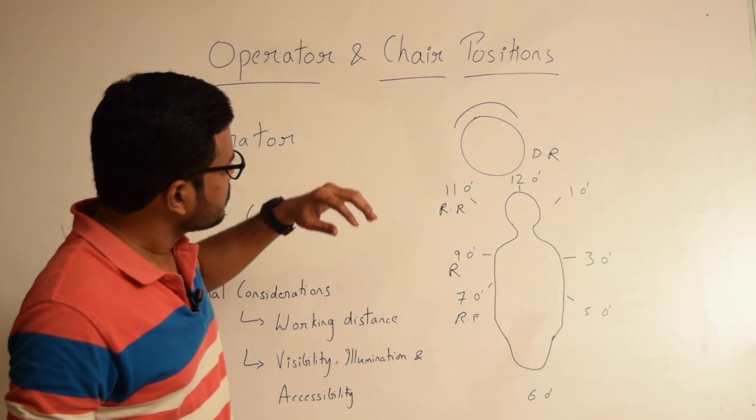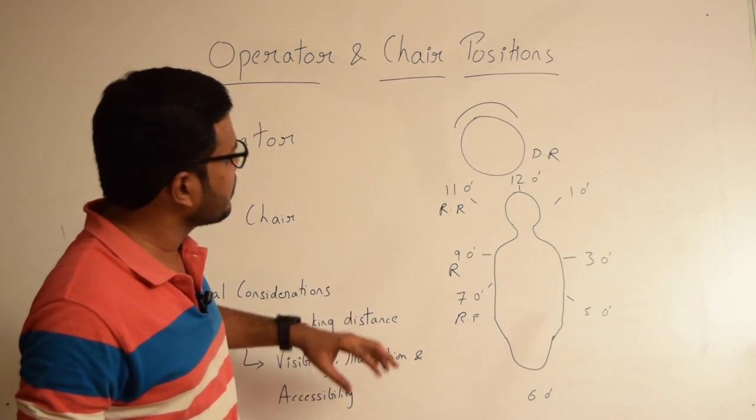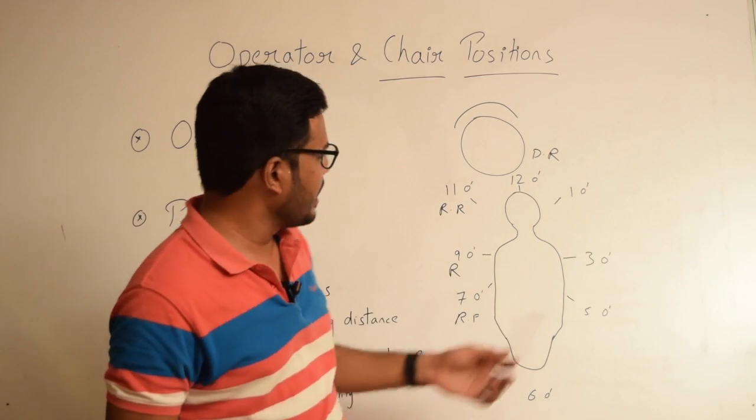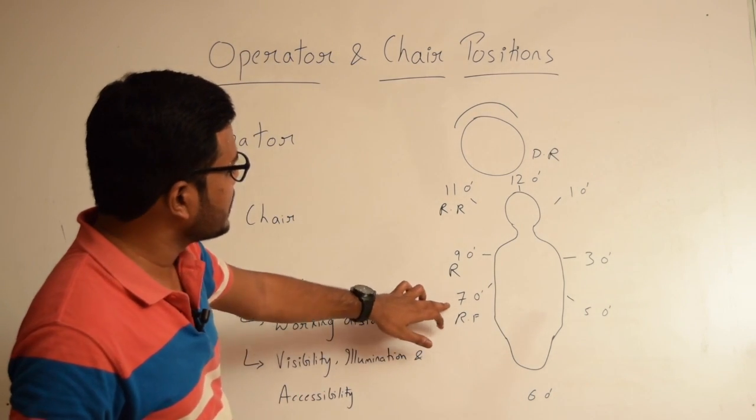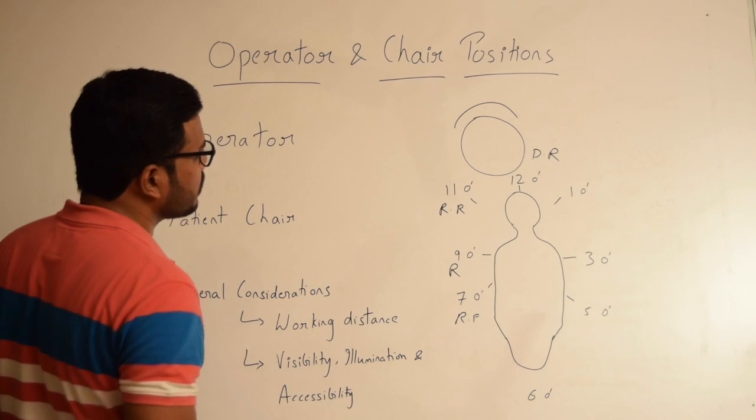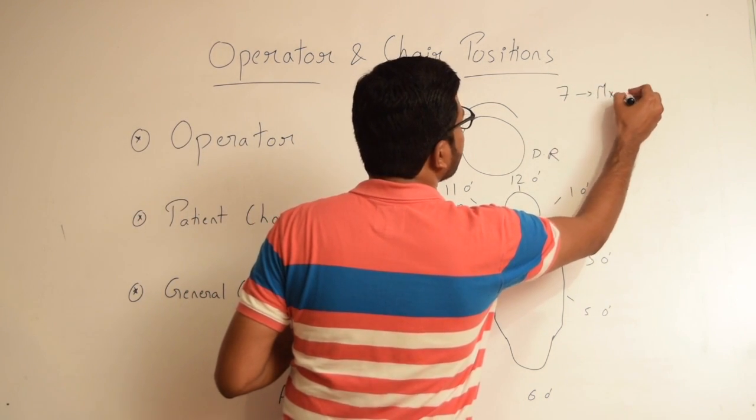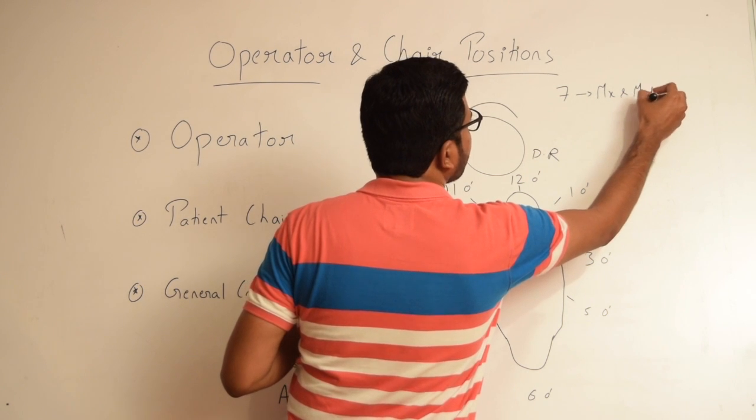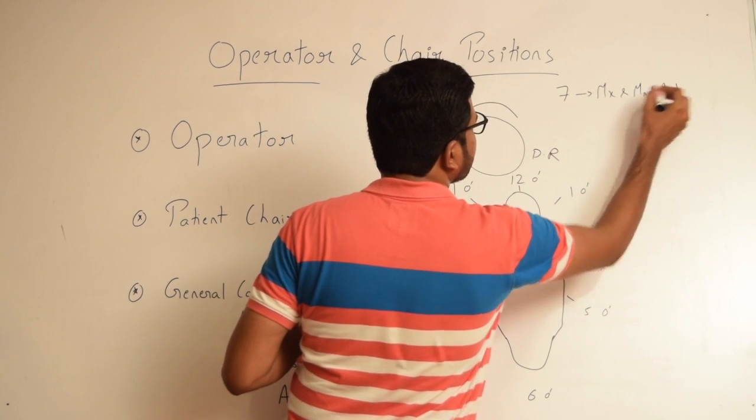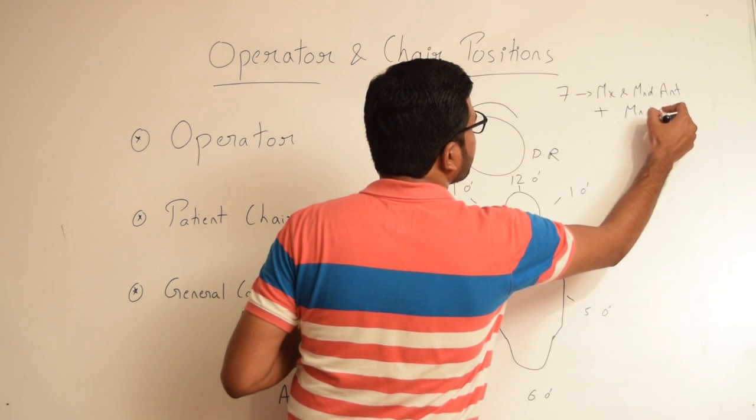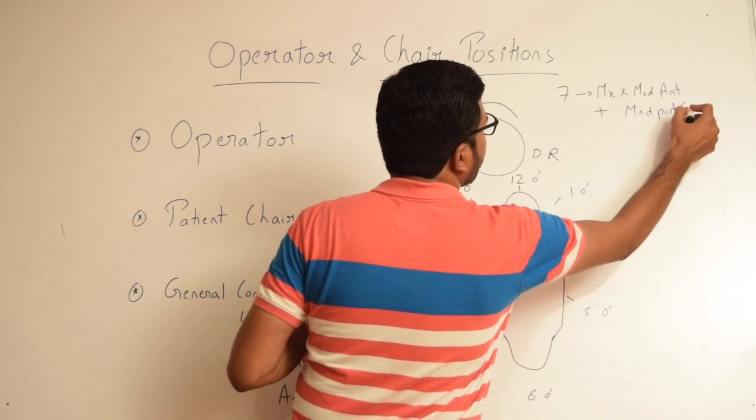We use these chair positions for operating upon different teeth. For example, 7 o'clock position is mainly used for operating upon maxillary and mandibular anterior teeth including mandibular posterior teeth of right side.